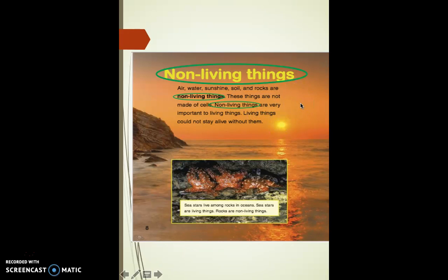What key details did I learn about non-living things? Air, water, sunshine, soil, and rocks are non-living things — those are examples. I learned that these things are not made of cells. Cells are what make up living things; that's how we know something is living. So if it doesn't have cells, then it's non-living. And finally, non-living things are very important to living things — they depend on each other. Those are the three key details I learned.